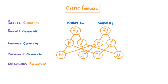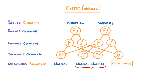For offspring phenotype, we'd have three offspring with normal phenotypes and one that actually had cystic fibrosis, so we'd have a three-to-one ratio. Notice though that even though these two in the middle have the normal phenotype, they are both carriers.